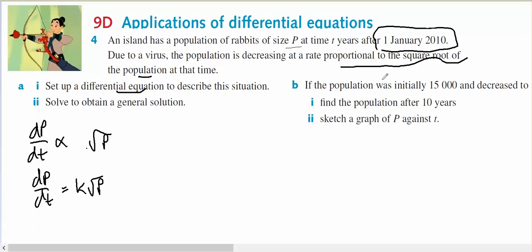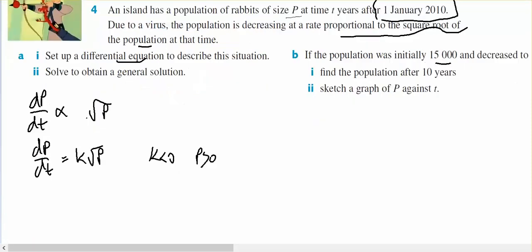In this particular case, because I know that they're decreasing, I can say that k is less than zero and p has to be bigger than zero, because you can't have the square root of a negative number, and I need to come up with a general solution.